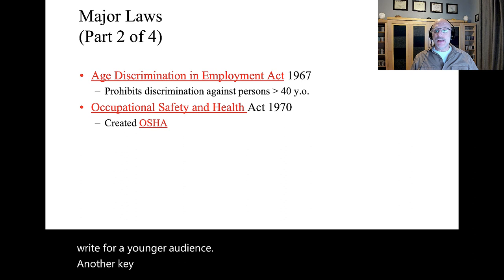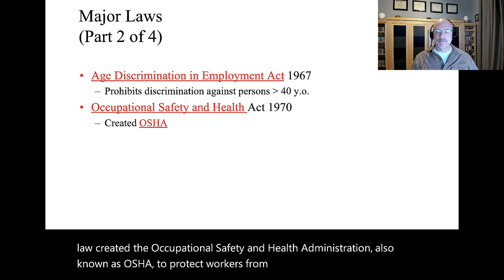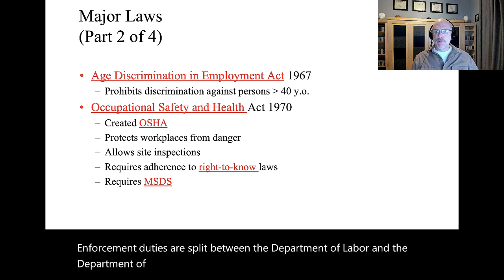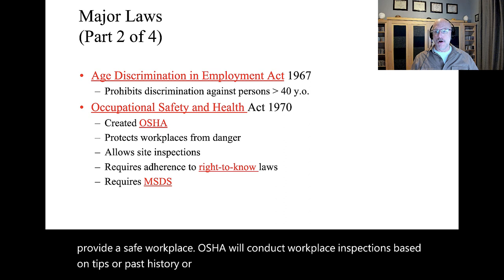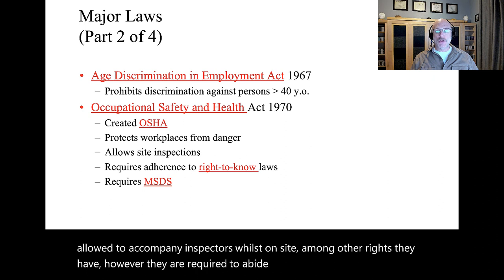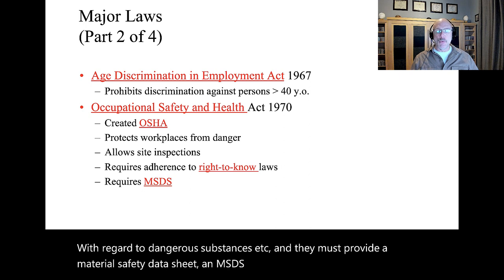Another key law is the Occupational Safety and Health Act of 1970. This law created the Occupational Safety and Health Administration, also known as OSHA, to protect workers from dangerous workplaces. Enforcement duties are split between the Department of Labor and the Department of Health. Each employer has a general duty to provide a safe workplace. OSHA will conduct workplace inspections based on tips, past history, or even luck of the draw. Business owners are allowed to accompany inspectors on site, but they are required to abide by right-to-know laws for employees regarding dangerous substances and must provide a Material Safety Data Sheet, or MSDS, for dangerous chemicals in the workplace.